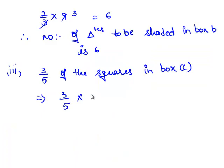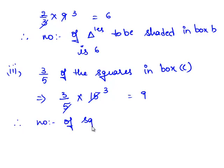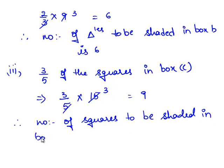Therefore 3 by 5 times 15. 5 goes into 15 three times, so 3 times 3 is equal to 9. Therefore the number of squares to be shaded in box C is 9.